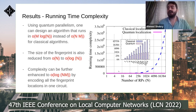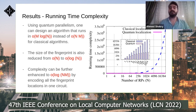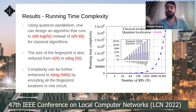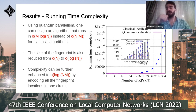This figure compares quantum and classical complexity, confirming that using quantum parallelism one can design an algorithm that runs in O(m log n) instead of O(mn) for classical algorithms. The fingerprint size is also reduced from O(n) to O(log n). Notably, this complexity can be further enhanced to O(log(nm)) by including all fingerprint locations in one circuit — an approach we are currently working on.